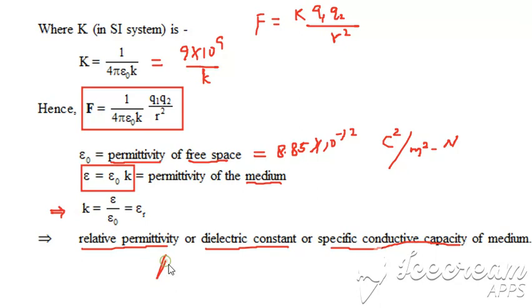For air, for instance, K is treated as 1. So capital K becomes 9×10⁹ as an answer. We will use this in Coulomb's law. Thank you.